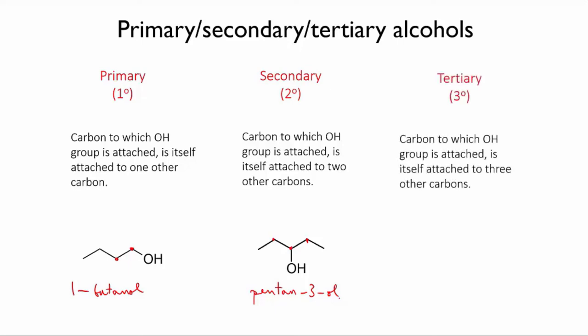Finally, a tertiary alcohol has the OH group on a middle carbon that has another substituent attached to it. This means the carbon to which the OH is attached is attached to three other carbons. This one is called 2-methylbutan2ol.